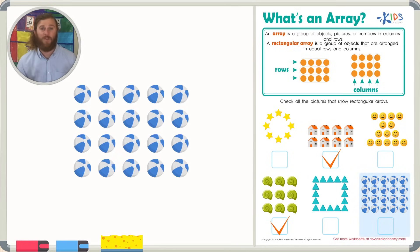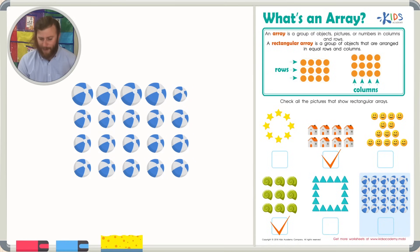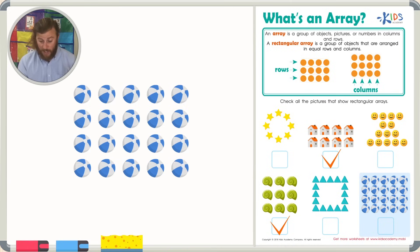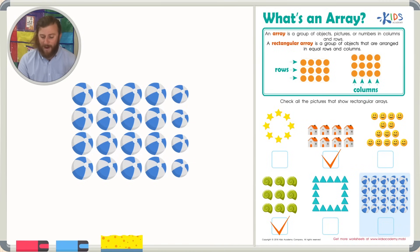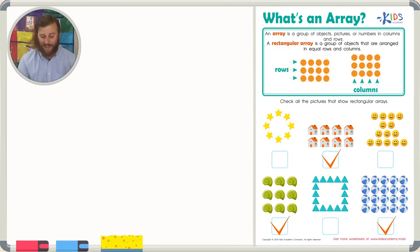Finally, if we look at our last picture of beach balls, this does look like a rectangular array. Let's count the rows and columns to make sure it's equal. In the first row there are five, and all the other rows also have five beach balls. In the first column there are four, and there are four in the second, third, fourth, and fifth columns as well. The columns and rows all contain equal numbers, so let's go ahead and check this as correct.